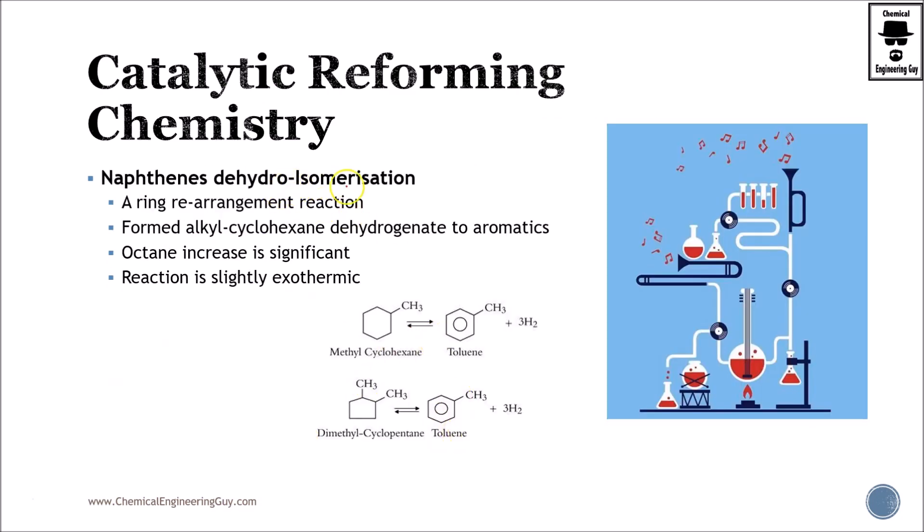Naphthene hydroisomerization is a ring rearrangement reaction formed by alkylcyclopentane. Cyclopentanes dehydrogenate to aromatics, octane increases significantly. Of course whenever you produce an aromatic there will be a huge jump on the octane variety. This one is interesting, actually a little bit more complex. This is technically just the dehydrogenation but as stated here, naphthene, you have your naphthene ring and two methyl. What's happening here is total rearrangement. You are producing a six carbon ring instead of five and you are producing the aromatic ring as well.